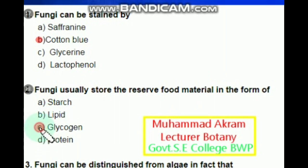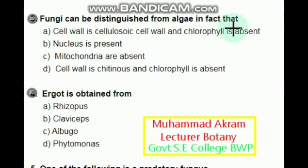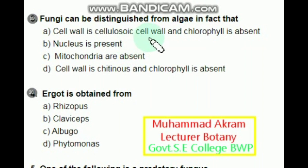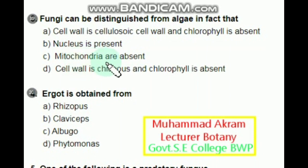Fungi can be distinguished from algae in the fact that — cell wall is cellulose and chlorophyll is absent? No. Nucleus is present? No. Mitochondria are absent? No. Cell wall is chitinous and chlorophyll is absent. This is the main difference between algae and fungi.